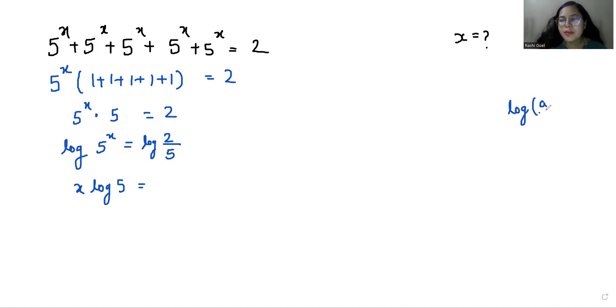We can use the property that log(a/b) equals log a minus log b. So we can write this as log 2 minus log 5.